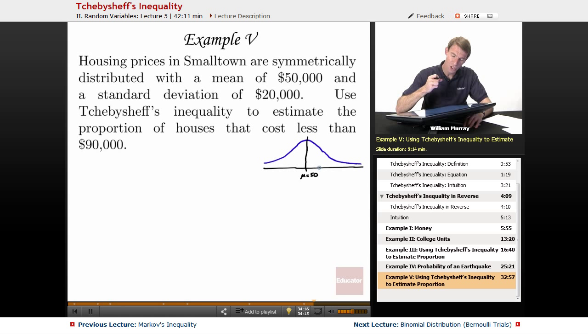Now, we want to estimate the proportion of houses that cost less than $90,000. So let me put in a $90,000 here. That's somewhere up beyond 50. That's 90. And we're told that we have a standard deviation of $20,000. So I guess that means the distance from the mean to the cutoff we're interested in is 40. So that's two sigmas, two standard deviations, because that's 2 times 20.